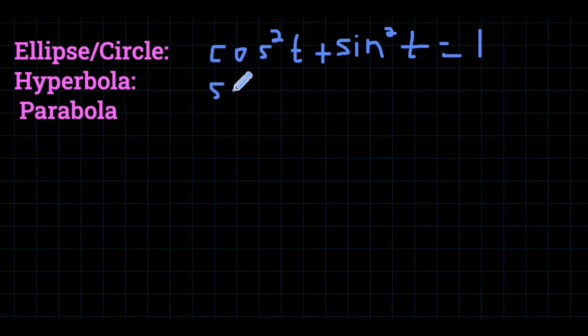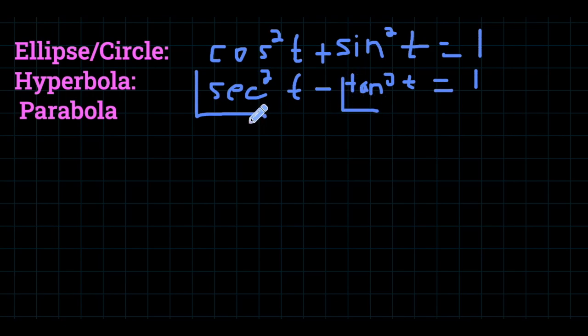The hyperbola was based on a related Pythagorean identity, secant squared minus tangent squared is equal to one. In this case, it does make a big difference as to which one you're defining to be secant versus tangent. Secant is always the one that's positive in the hyperbola equation, and tangent is always the one you're subtracting.